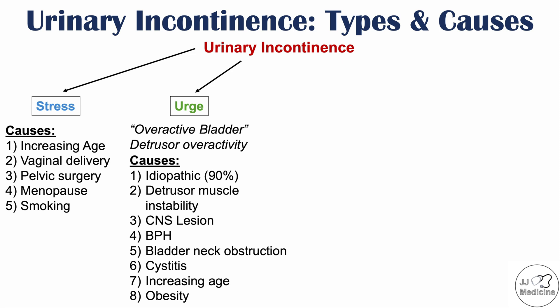CNS lesions such as spinal cord injuries can cause problems in neural control over the detrusor muscle, leading to detrusor overactivity. Benign prostatic hyperplasia, which occurs in men, is another common cause of urge incontinence, as is bladder neck obstruction. Chronic cystitis — chronic inflammation of the bladder — can lead to an overactive bladder. Increasing age and obesity are also risk factors for urge incontinence.